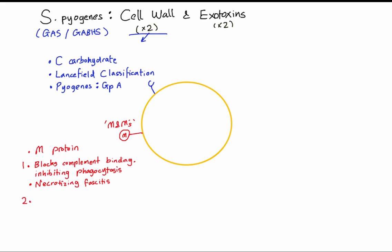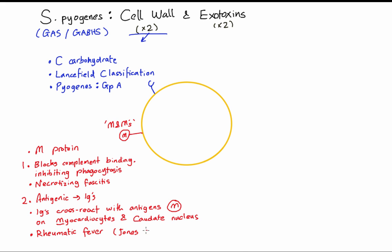The second function of M protein, and this is important, is that it's antigenic just like C carbohydrate. This means that antibodies develop against M protein, and these antibodies will cross-react with similar antigens on the heart, on myocardiocytes (you can remember M and myocardiocytes), and also with antigens in the brain in the caudate nucleus. You get the disease rheumatic fever, which involves myocarditis, Sydenham's chorea, and other symptoms grouped into the Jones criteria.